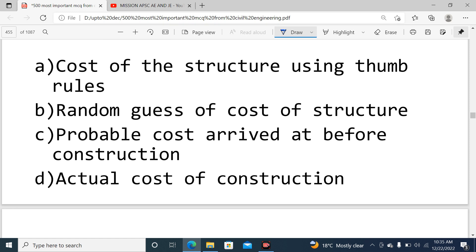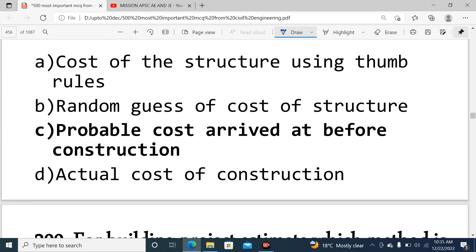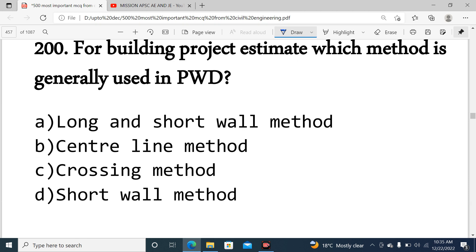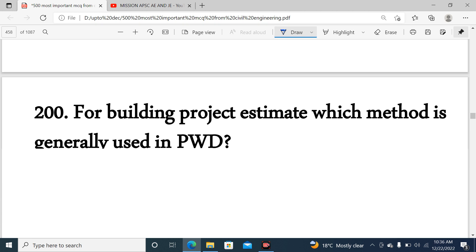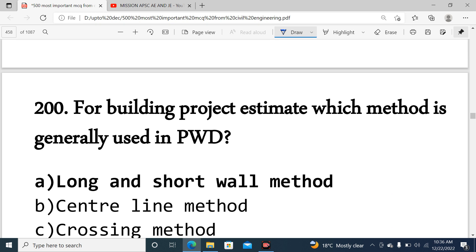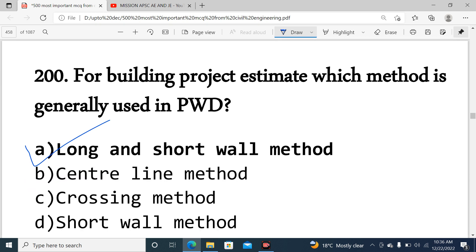Question 199: An estimate is the probable cost arrived at before construction, so option C is correct. Question 200: For building project estimate, PWD generally uses the long and short wall method. So we have discussed 25 MCQs with explanations.